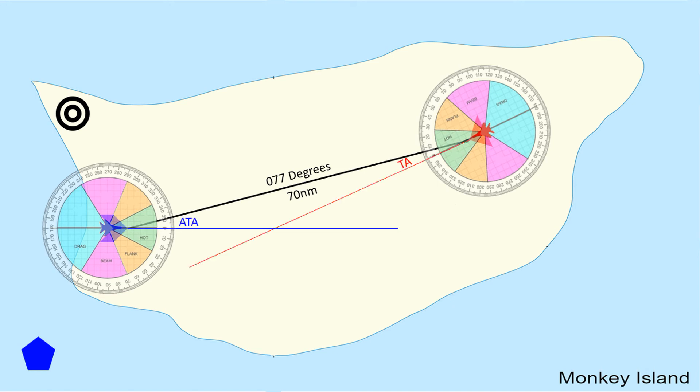And the ATA and the TA meet. So if these aircraft are both at the same altitude and they're moving at the same speed, you can very simply plot those lines and see exactly where they're going to intercept each other.